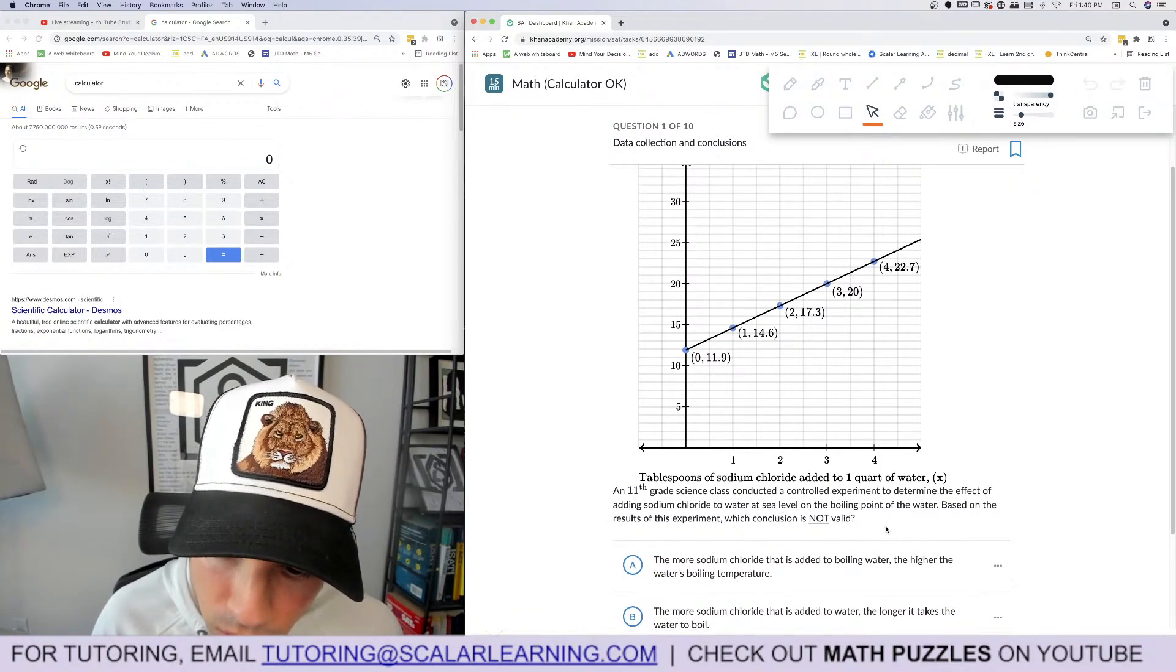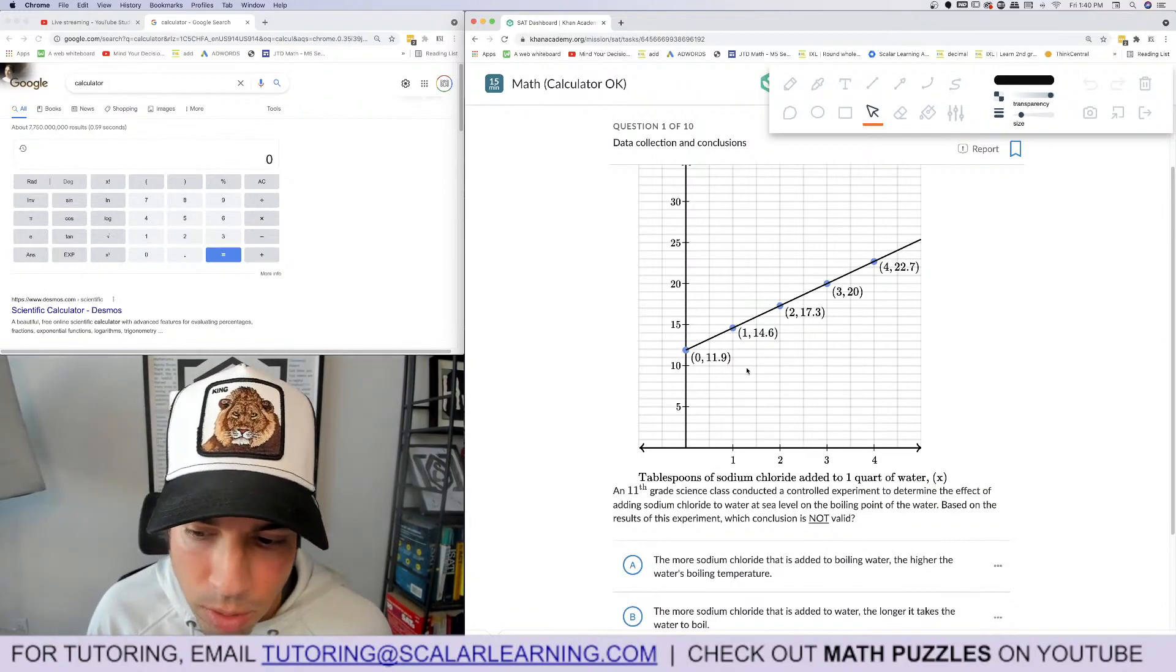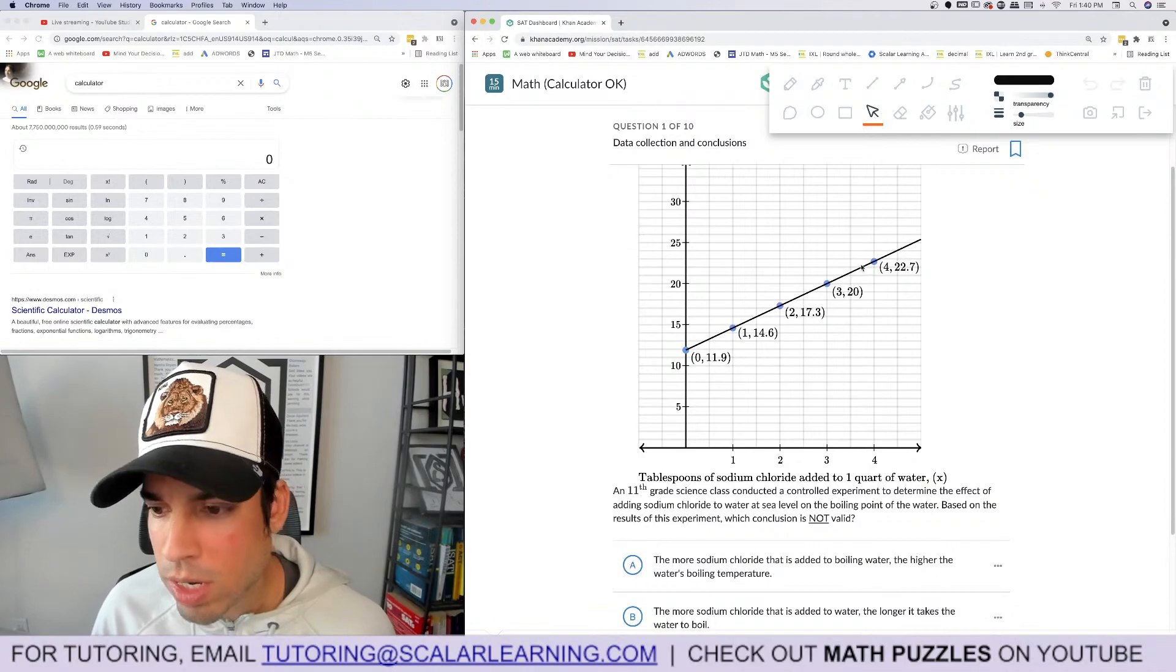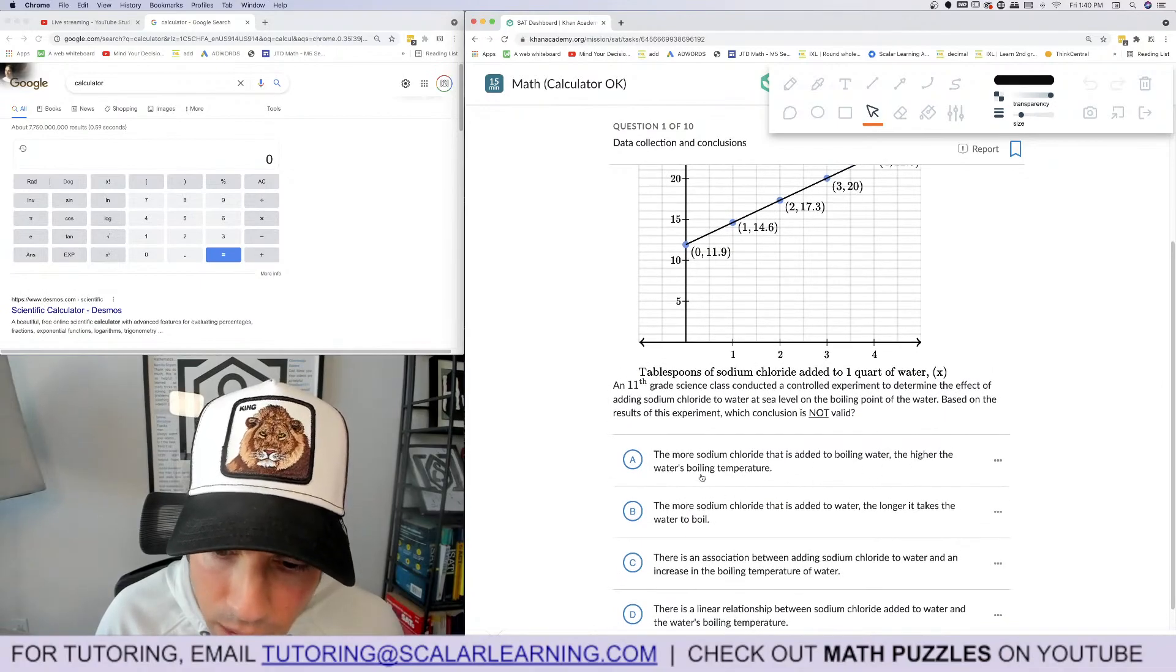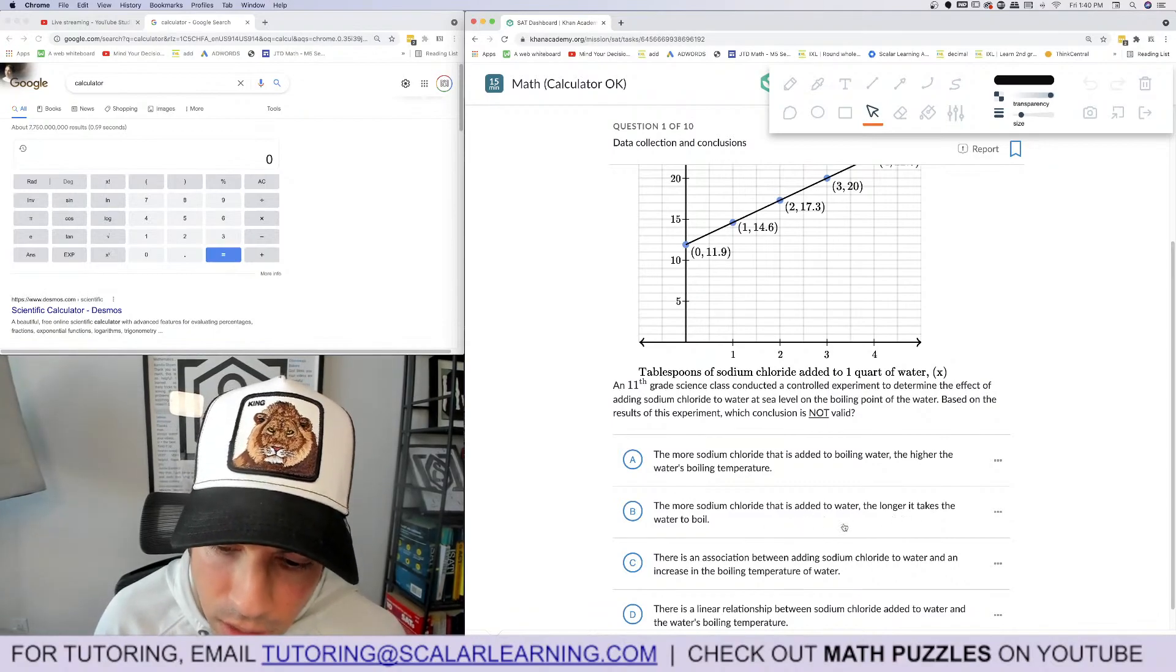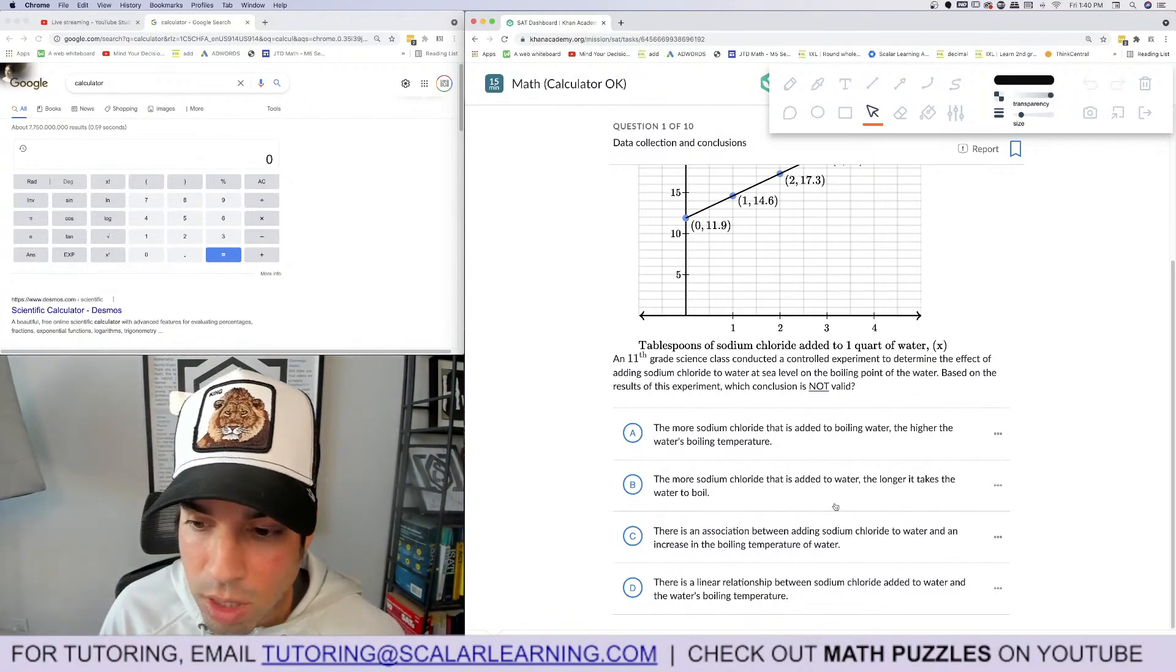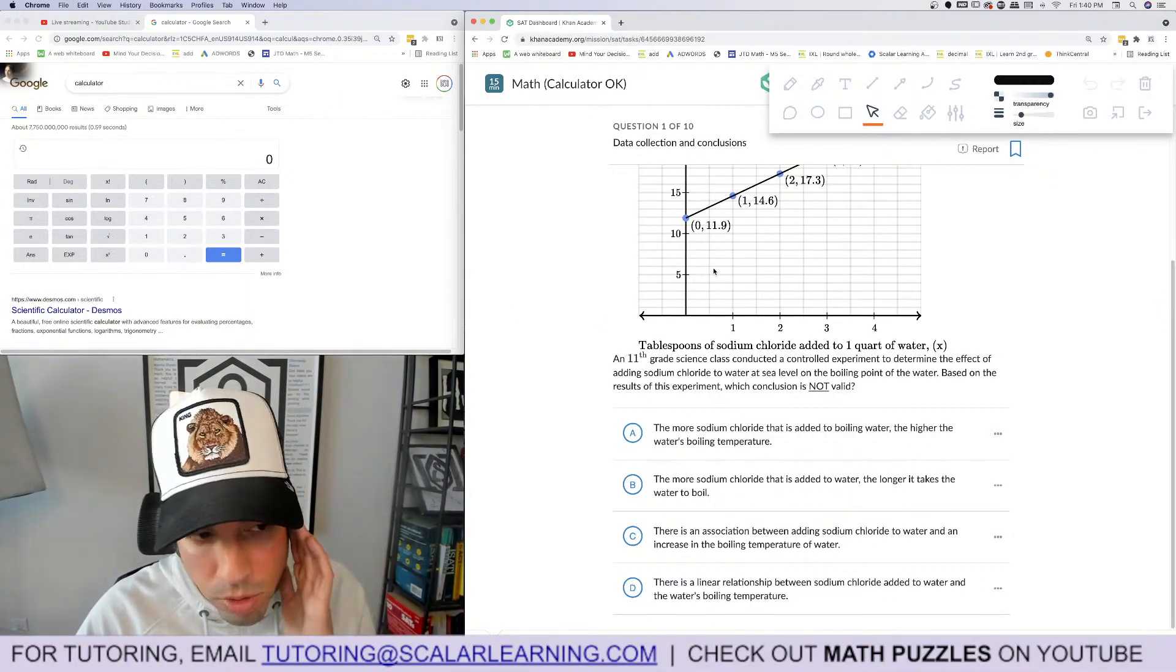Temperature of boiling water above 200 degrees Fahrenheit. So this is like 210, 220, 230. Tablespoons of sodium chloride added to one quart - conducting a controlled experiment to determine the effect of adding sodium chloride to water at sea level on the boiling point. Based on the results of this experiment, it looks like as you're adding more sodium chloride, aka salt, the boiling point is going up. Which of the following conclusions is not valid? The more sodium chloride that's added the longer it takes the water to boil - I mean it looks like higher temperature, but I'm not sure about that one. That's a little iffy because it has nothing to do with time, it just says the temperature goes up.